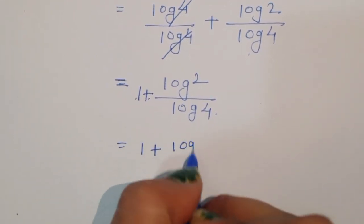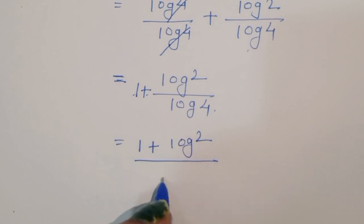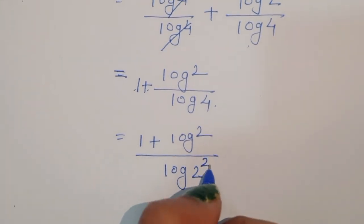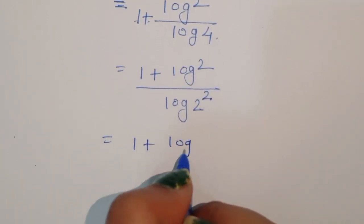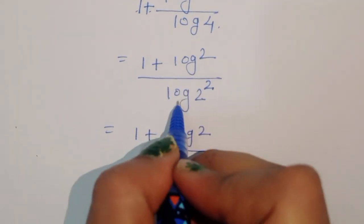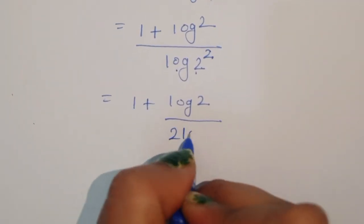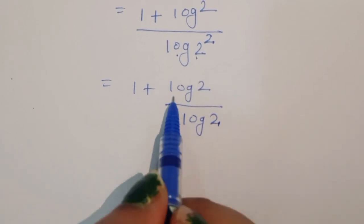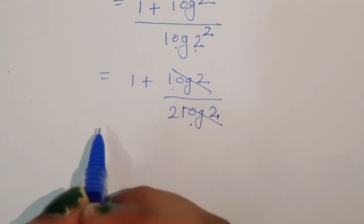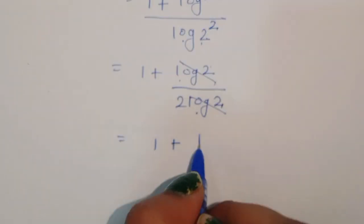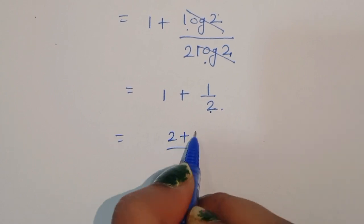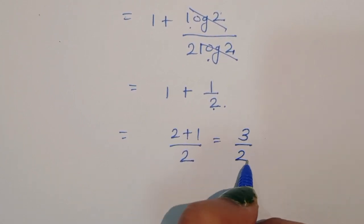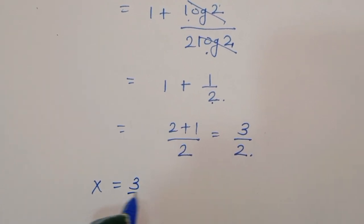So we have 1 plus log of 2 divided by log of 4. We can write log of 4 as log of 2 power 2, which equals 2 times log of 2. So this becomes 1 plus log of 2 divided by 2 log of 2. The log of 2 cancels, giving 1 plus 1 by 2. Taking LCM, that is 2 plus 1 divided by 2, which equals 3 by 2. So x is equal to 3 by 2.